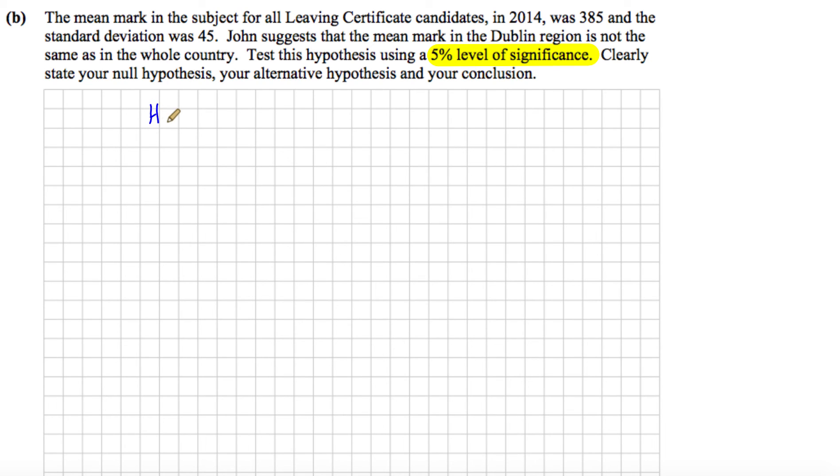So the null hypothesis, which we always show as H0, the null hypothesis will always be that there is no change. So in our case, the null hypothesis would be that the mean mark in Dublin is the same as the mean in the country.